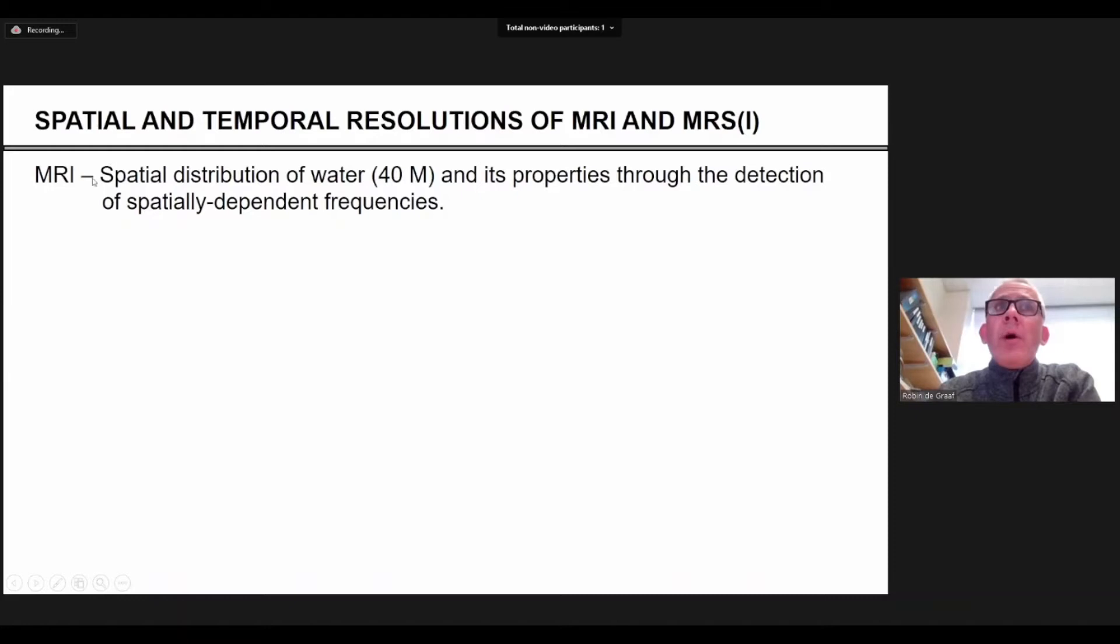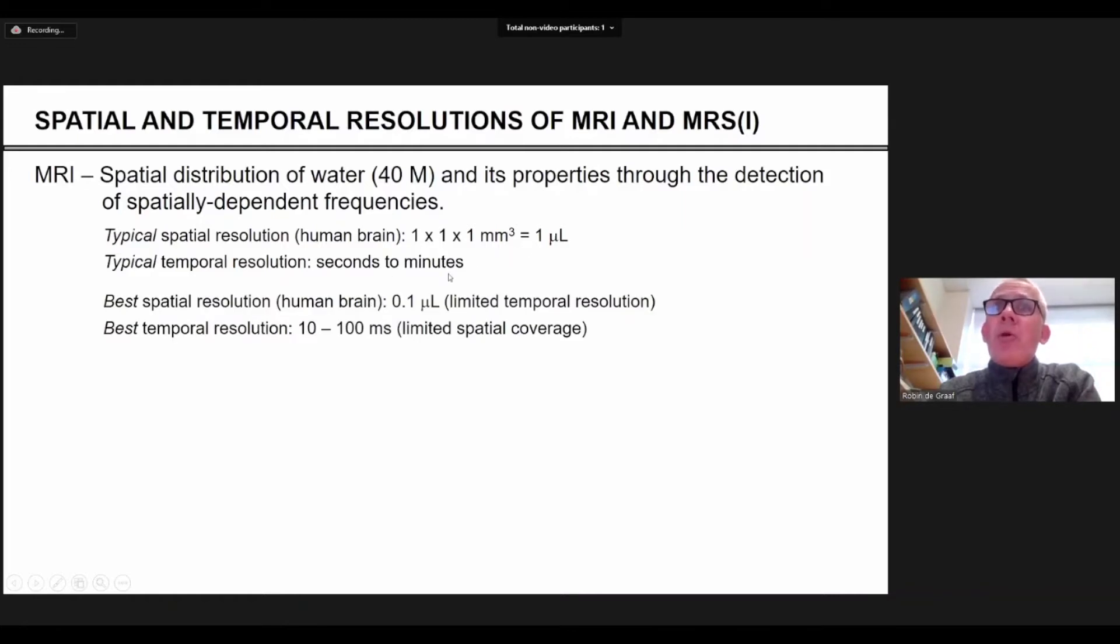So just to get some definitions out of the way, when we talk about MRI or MR imaging, we're looking at the spatial distribution of water, which is about 40 molar, and we're looking at water and its properties. The frequencies that we detect with NMR are spatially dependent so that we can make it into an image. The resolution of MRI is typically about one microliter and you can acquire that in seconds to minutes. And if you really push it, you can go about an order of magnitude better on either one of them.